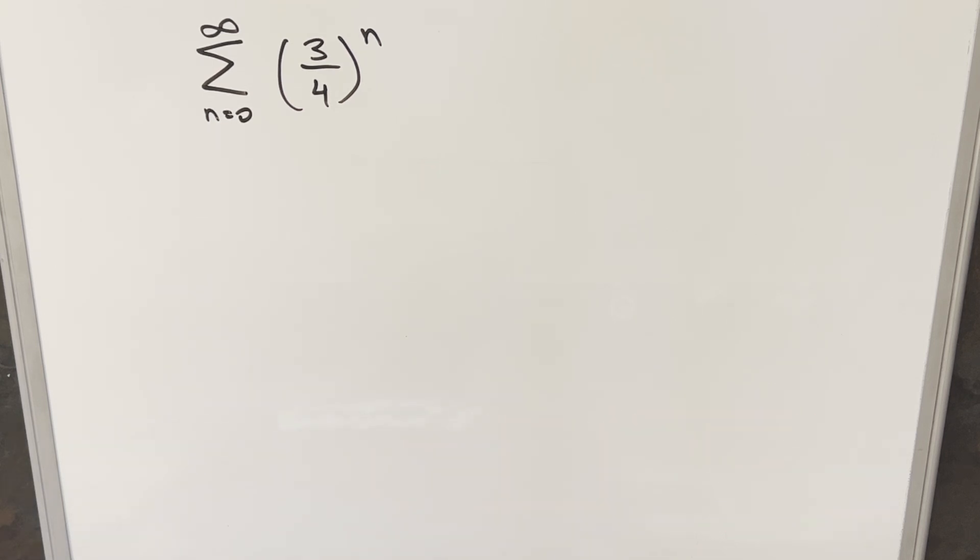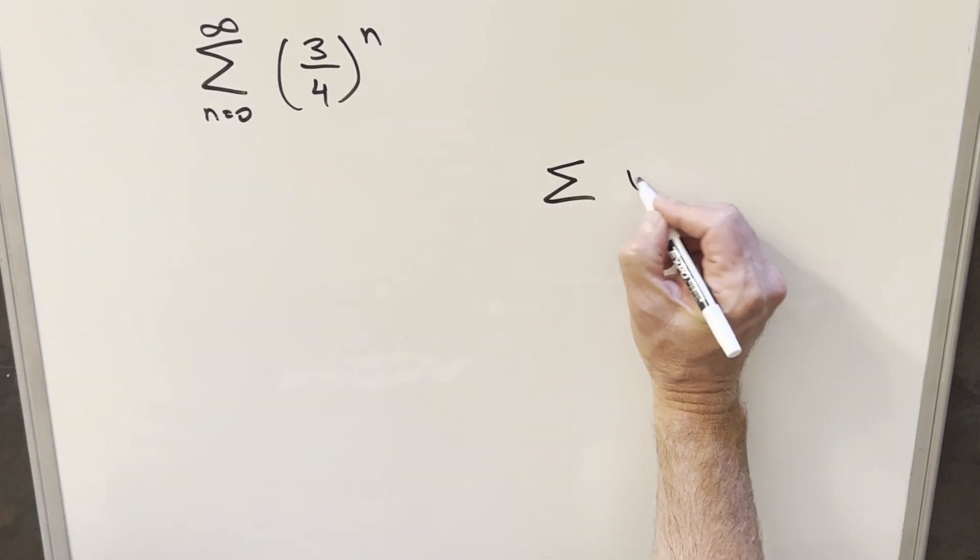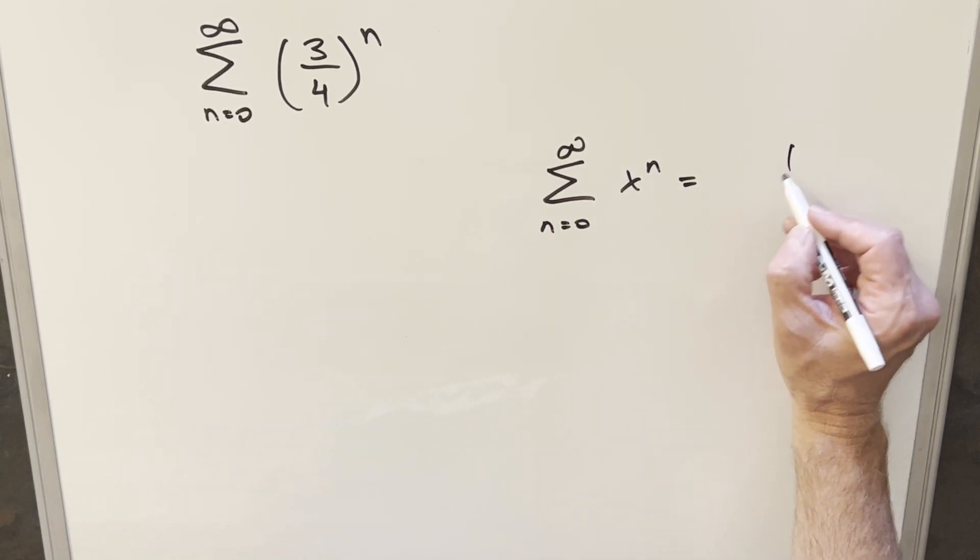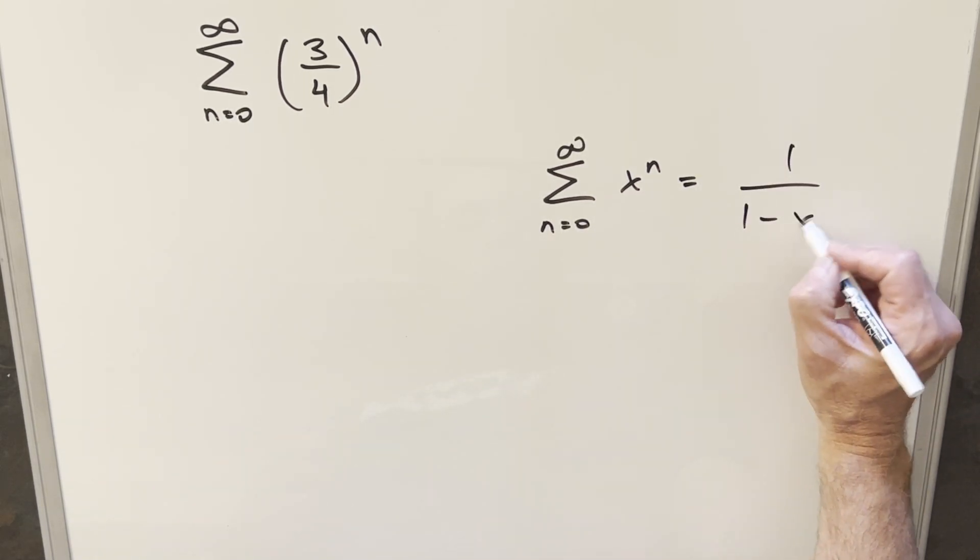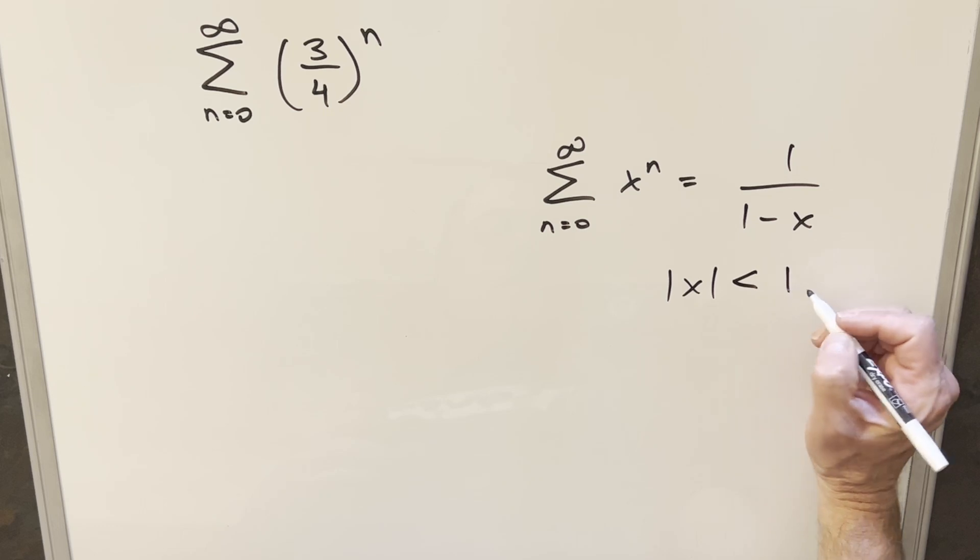The first thing to notice is that this is clearly in the form of a geometric series. For our geometric series, we have something just like this. We can write it as x to the n, and for this our formula is just going to be 1 over 1 minus x. For convergence, we have the condition that the absolute value of x needs to be less than 1.